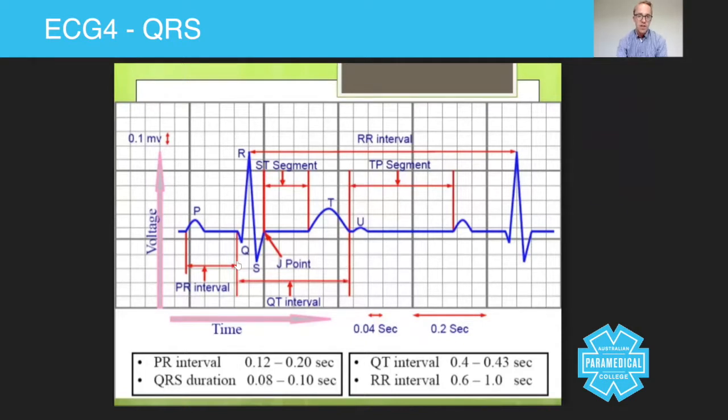Now what you notice on this QRS complex: the first thing is the Q wave is a negative deflection, negative meaning it goes below this line. Anything below it is negative, anything above it is positive. Not everybody has a Q wave, but for the purposes of this lecture, there is this thing called a Q wave. Then this next line is an R wave and then it comes back and goes deeper below the Q wave and that's an S wave.